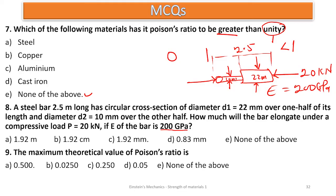Number twenty-one: in a tensile test on a mild steel specimen, the breaking stress compared to the ultimate stress is — the breaking stress of mild steel is always less than its ultimate stress.